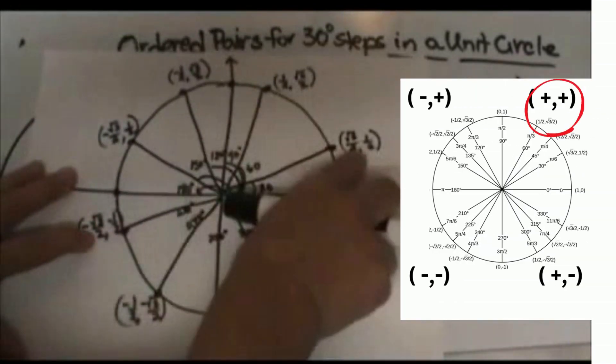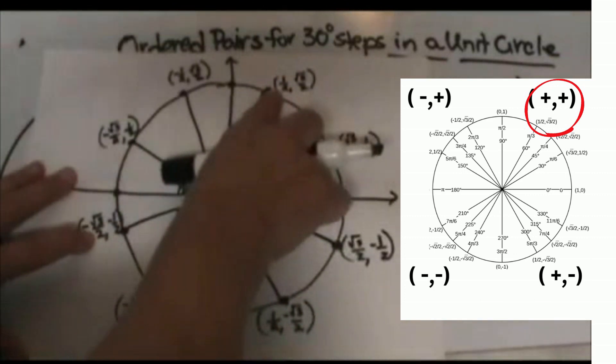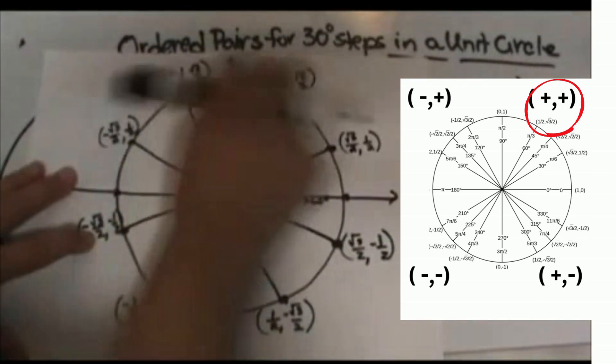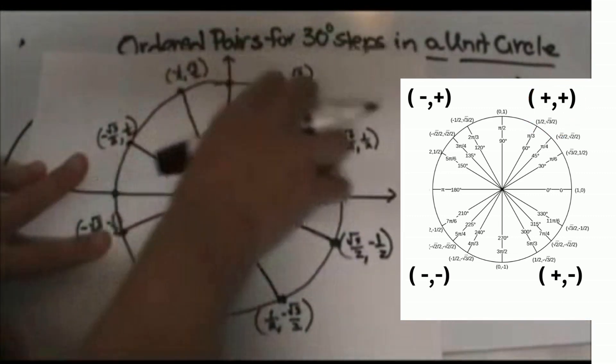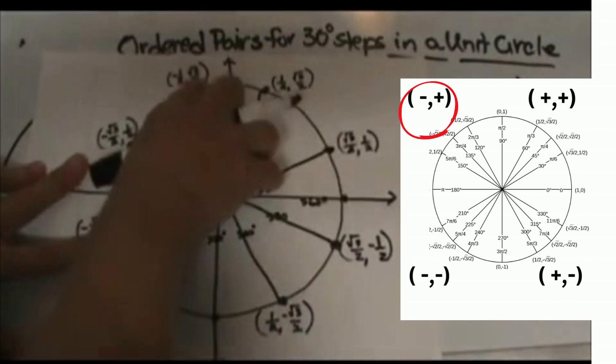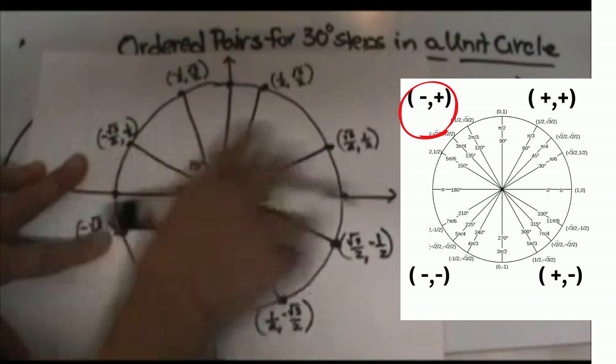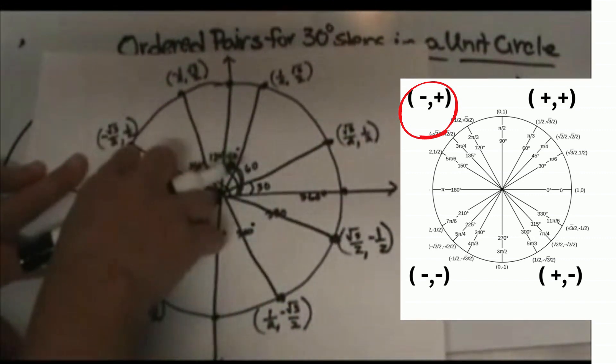Here is our first quadrant, and these are both positive. This is going to be the mirror image straight over here. Basically, I'm just folding over the y-axis to get these mirror images. This becomes (-1/2, √3/2), and this one becomes its mirror image (-√3/2, 1/2).